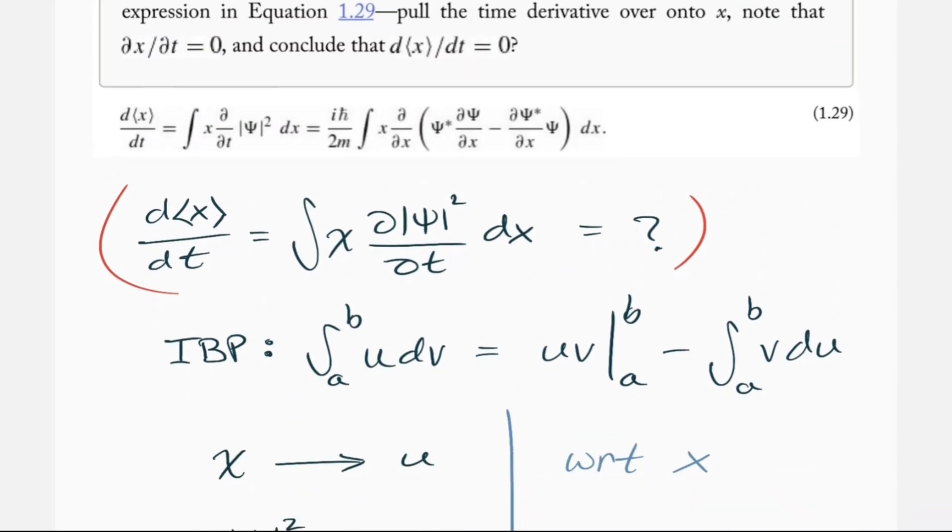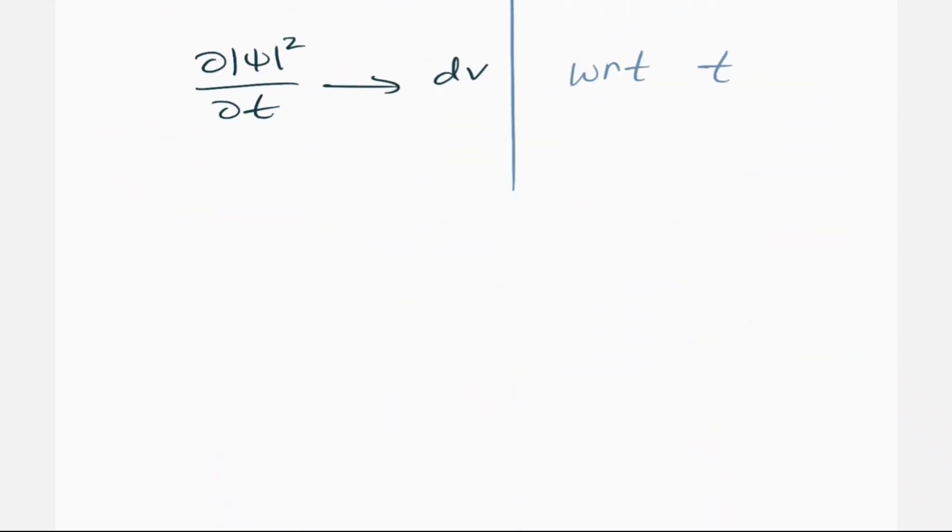However, when we take the second integral in equation 1.29, if we were to take this integral and write that out, I'm going to write that out real quick. So what we really know is that dx/dt for the expectation value of x is equal to i h bar over 2m times the integral of x, partial derivative with respect to x, of psi star, and then d psi dx,